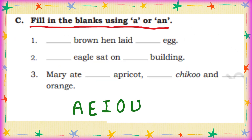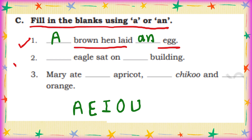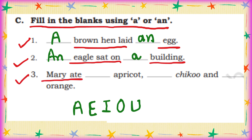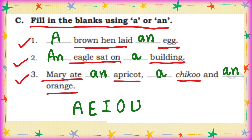Fill in the blanks using A or AN. A brown hen laid AN egg — 'brown' starts with B (consonant), 'egg' starts with E (vowel). AN eagle sat on A building — 'eagle' starts with E (vowel), 'building' starts with B (consonant). Mary ate AN apricot, A chiku, and AN orange — 'apricot' starts with A, 'chiku' starts with C, 'orange' starts with O. I hope you understood.